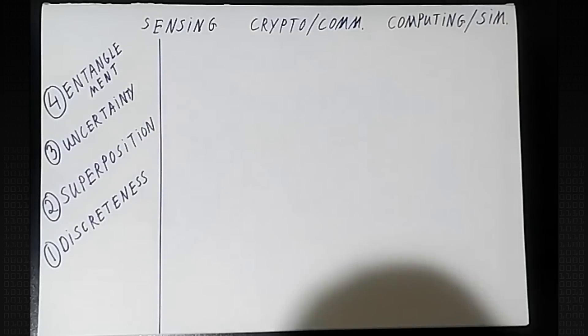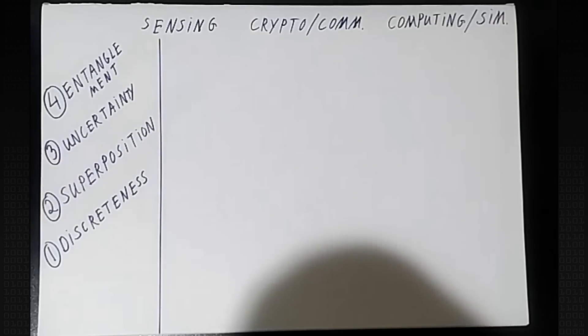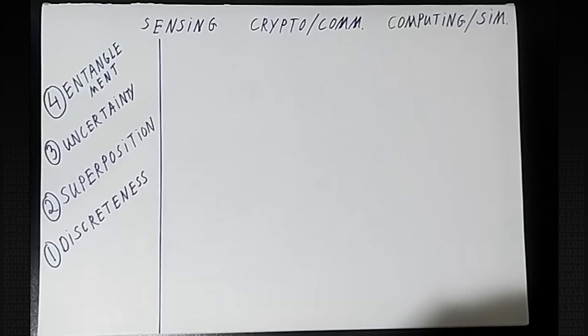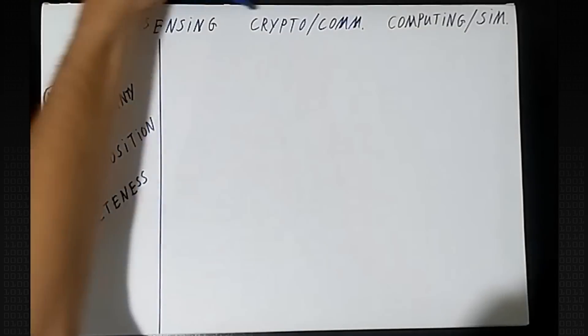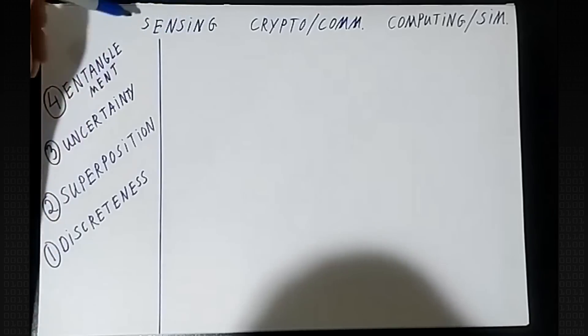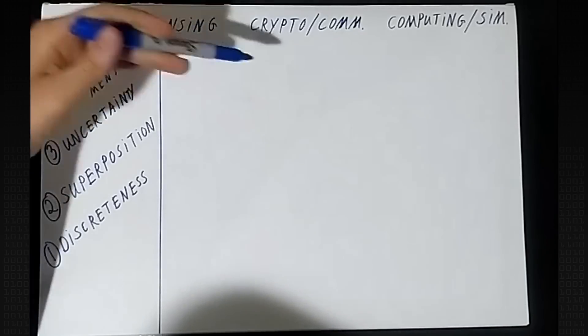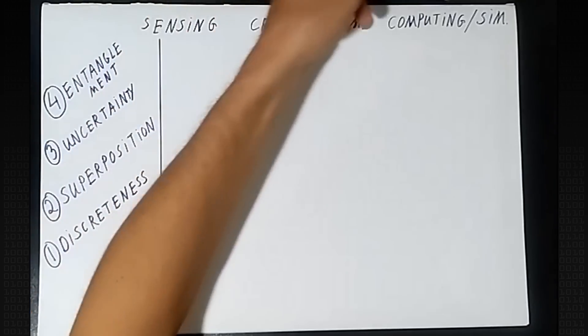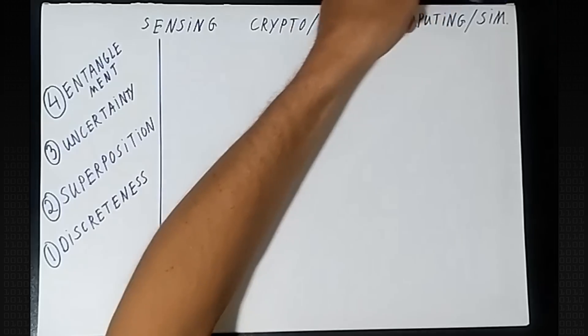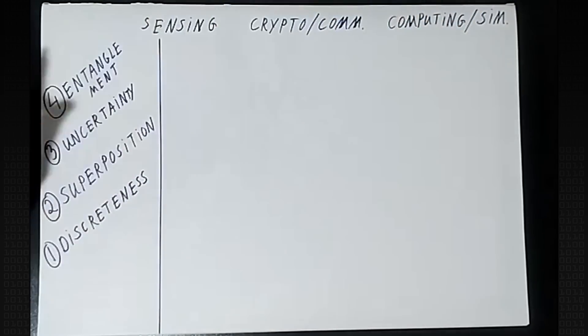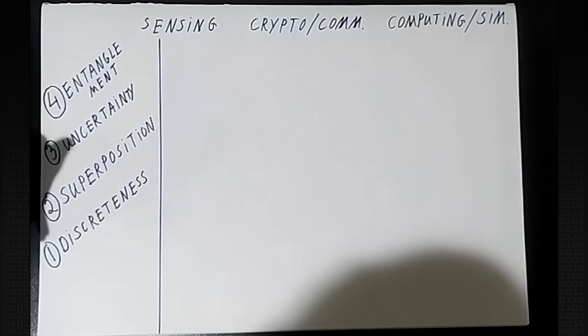Uncertainty you can kind of have either way — that one doesn't really matter. On the top here, I have sort of the four big paradigms of quantum technologies, organized into three, actually. One is sensing or metrology or imaging. The other one is cryptography or communication, and the third one is computing. The fourth one, appended, is simulation, and I'll get into that a little bit more.